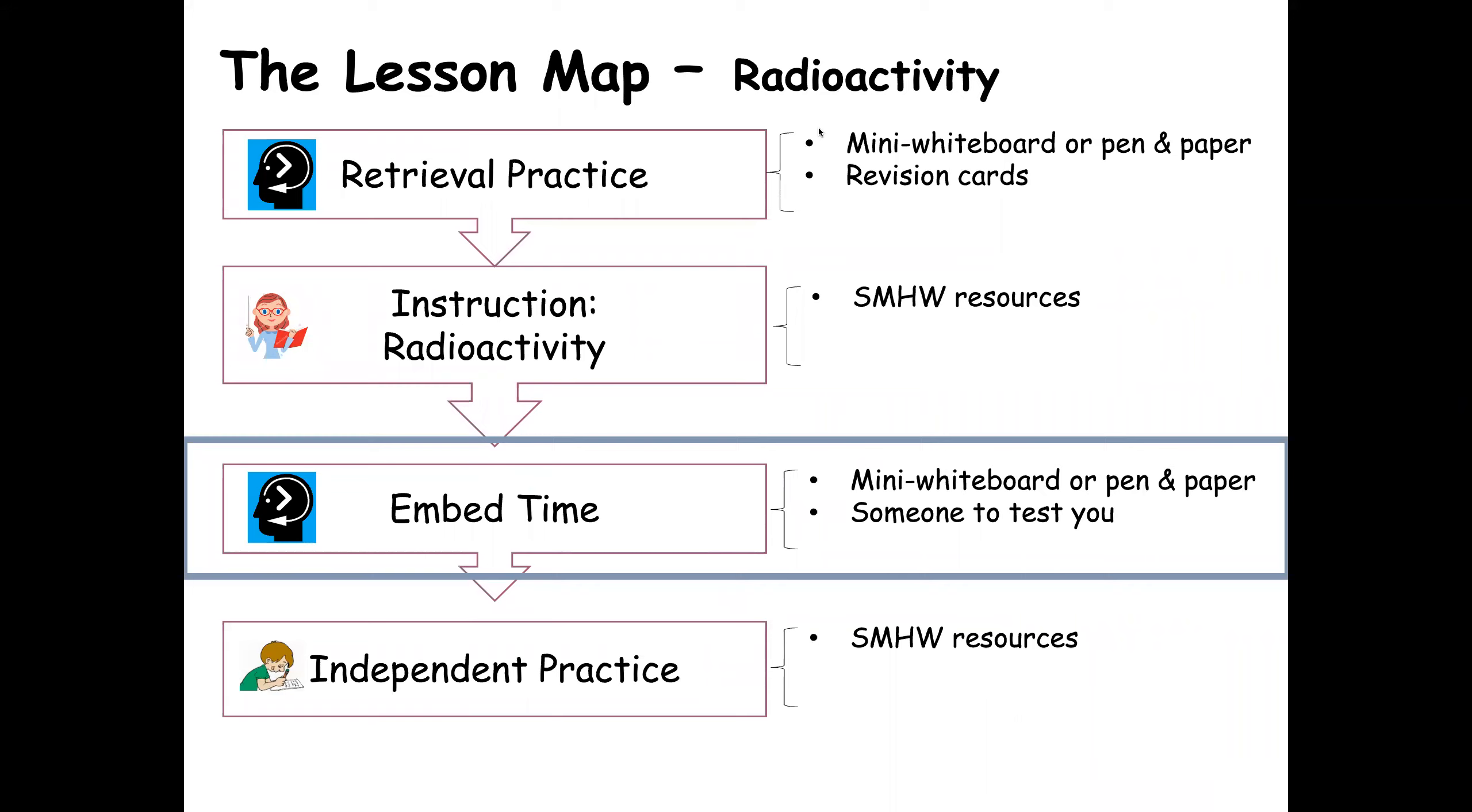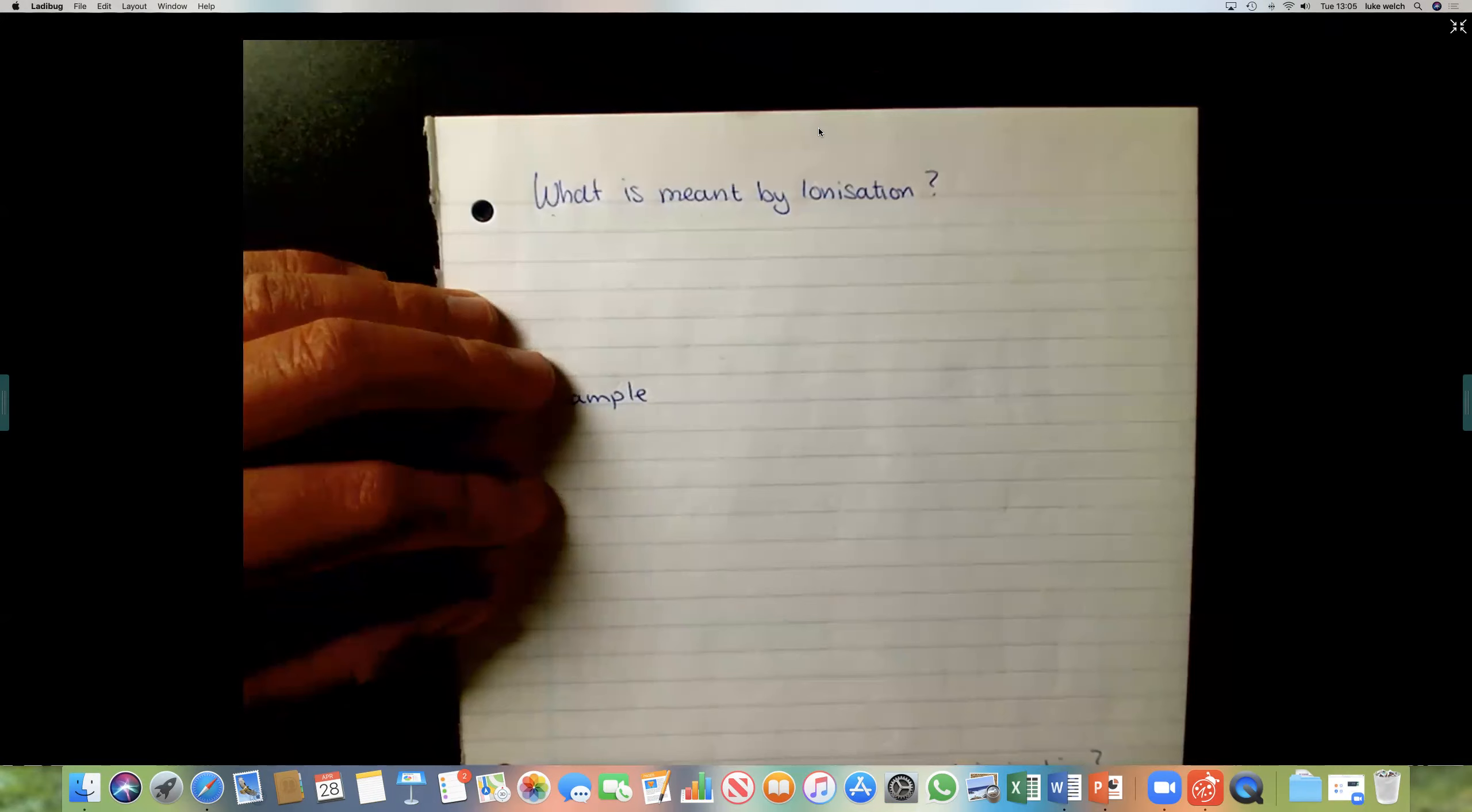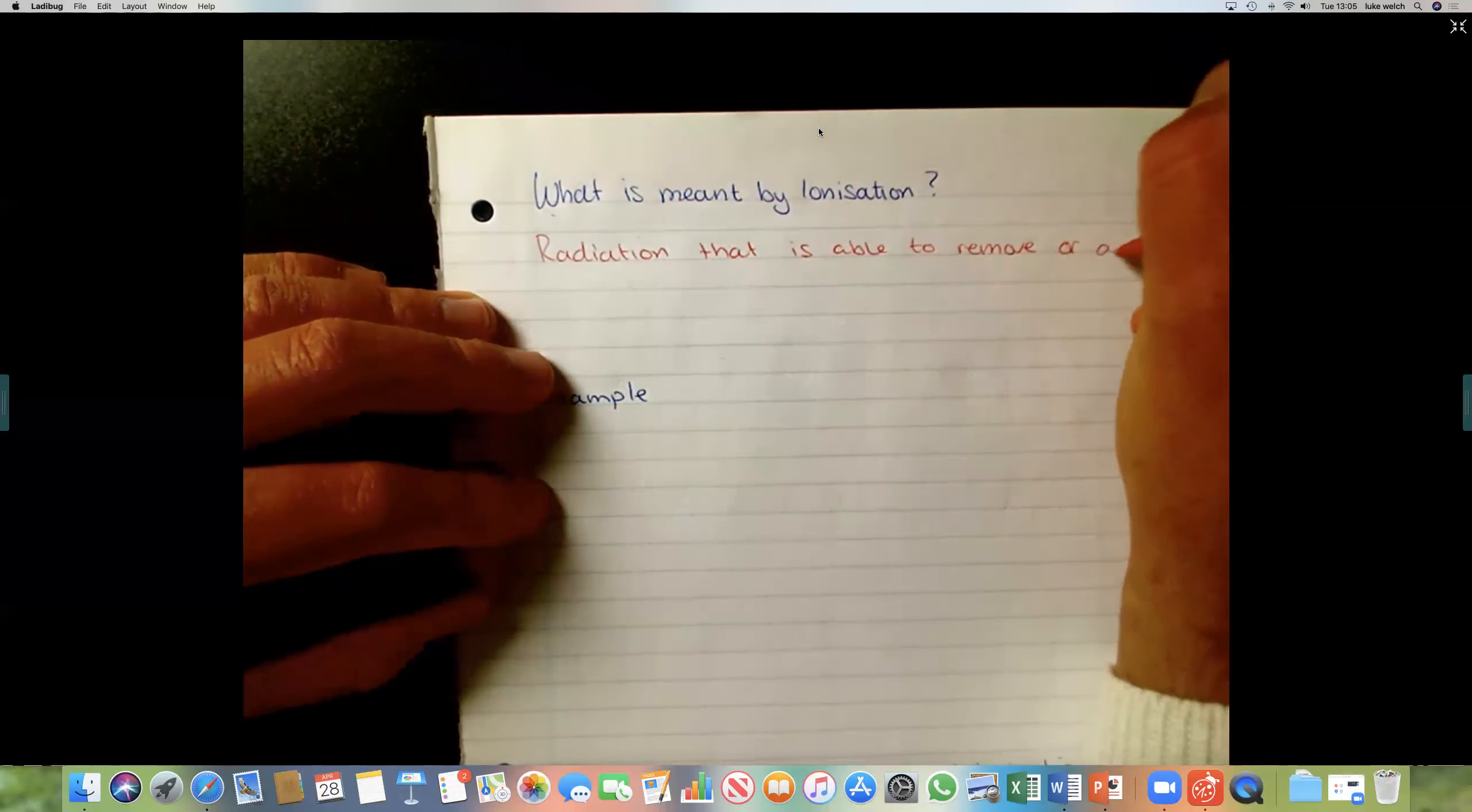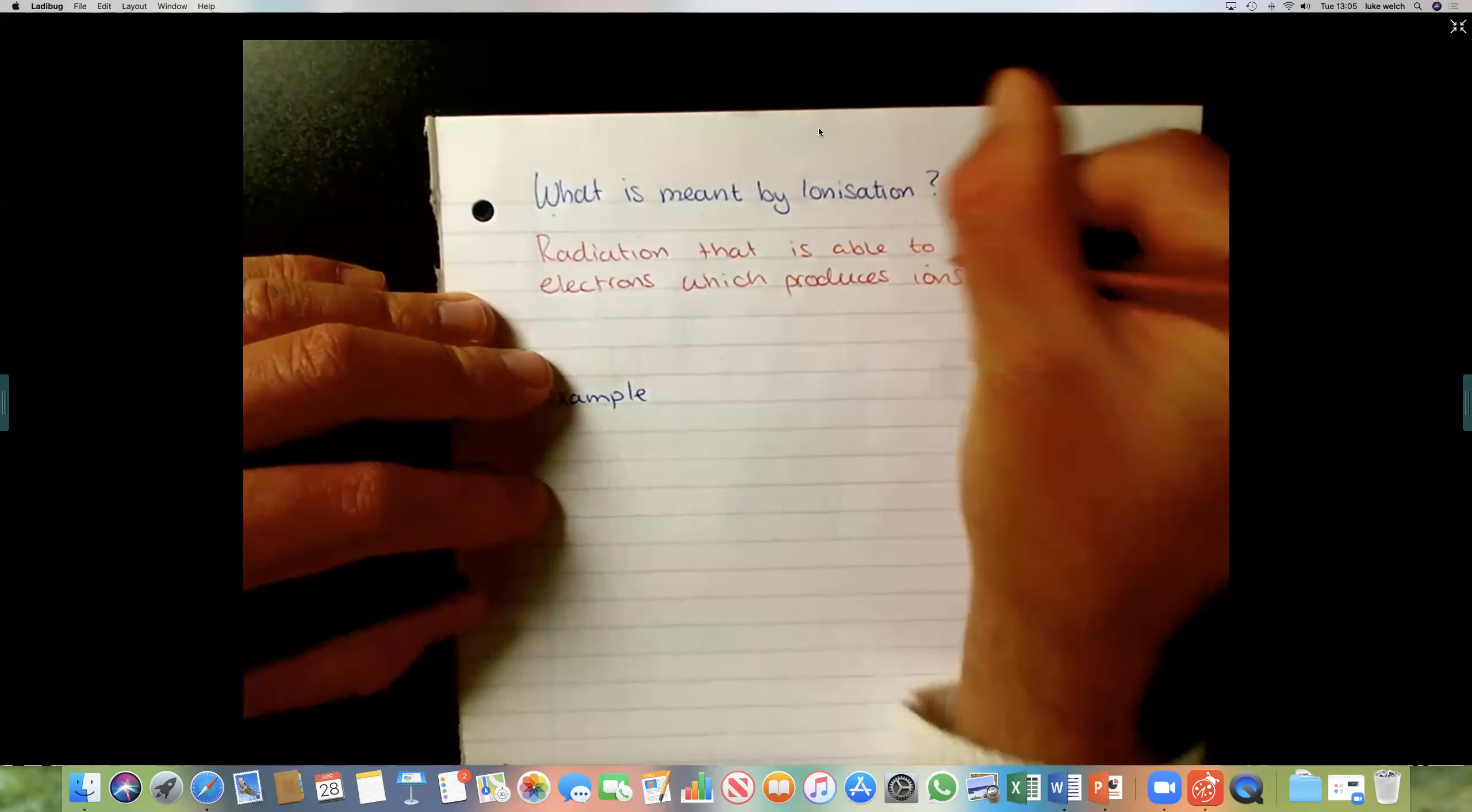We're going to move now to look at what is meant by ionization. That's a funny term. And some of you might recognize it from previous topics. So we're going to have a look now and write down some key definitions. So, what is meant by ionization? Ionization is caused by radiation that is able to remove or add electrons which produces ions.